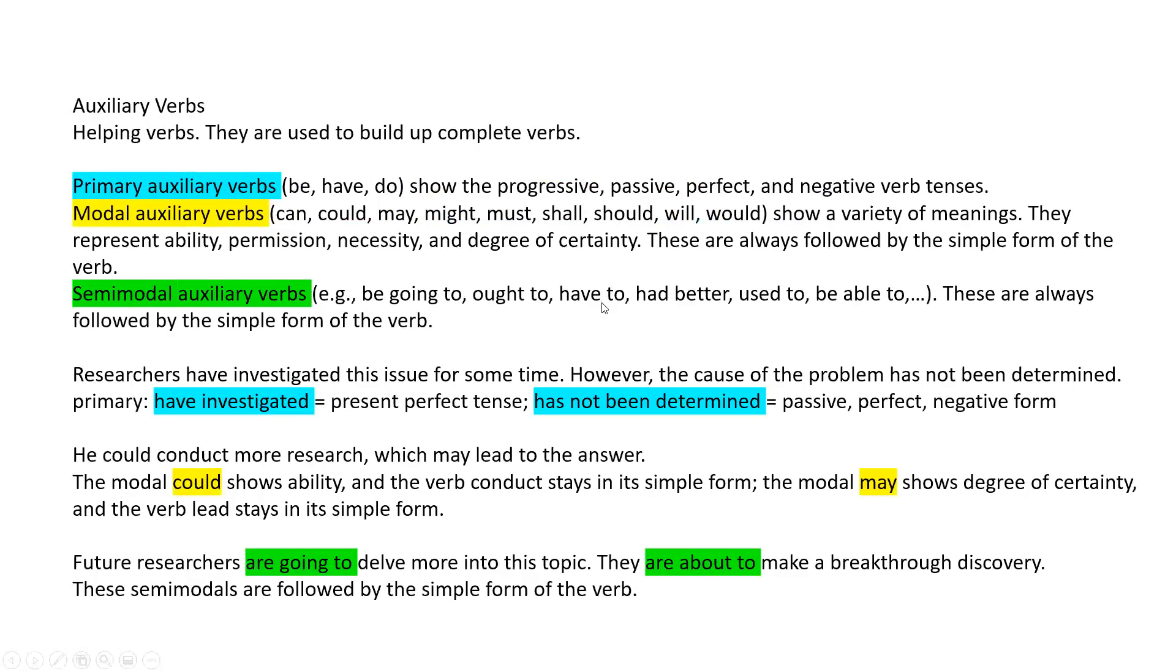Auxiliary verbs. Well, they are helping verbs. They are used to build up complete verbs. We have primary auxiliary verbs like the verb be, have, and do. Or we have modal auxiliary verbs like can, could, may, might, must, shall, should, will, would. Or we have semi-modal auxiliary verbs like be going to, ought to, have to, had better, used to, or be able to. Here we have some examples.